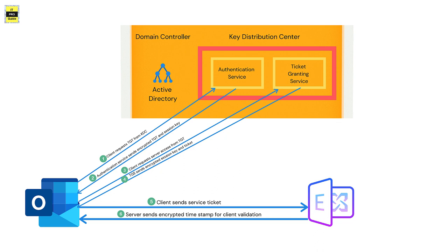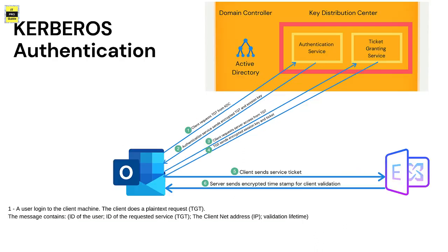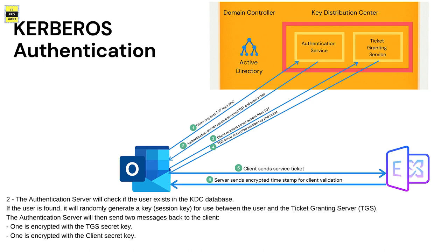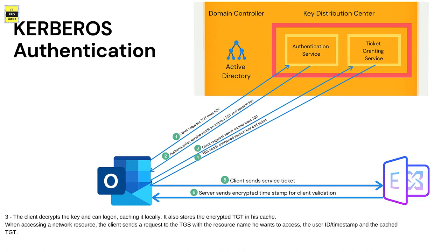We have a client — Outlook or any other application — and our Exchange Server. The process starts when a user logs in to the client machine and the client requests an authentication ticket called a TGT. The TGT includes the ID of the user, the ID of the requested service, and other details. The KDC verifies the credentials and sends back an encrypted TGT, which the client stores. When it expires, the local session manager requests a new TGT from the KDC.